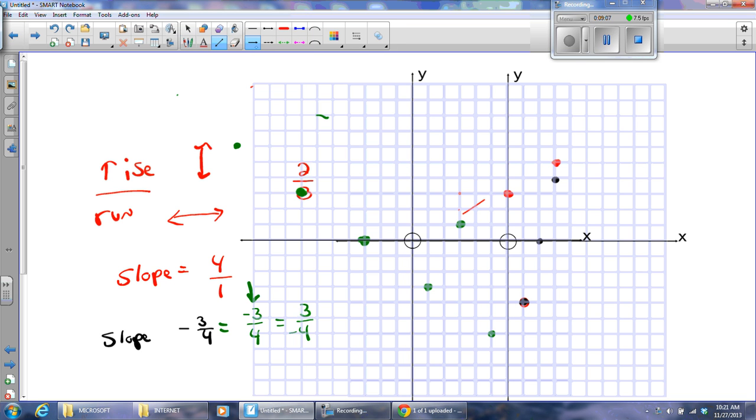And notice, every single one of those points is on the same line. So, when you have a negative slope, you either make the numerator negative or the denominator, but you don't make both negative. These three are on the same line, these three are on the same line.